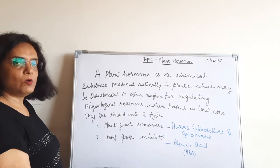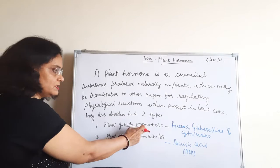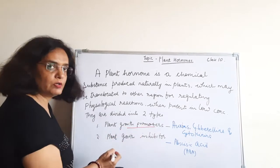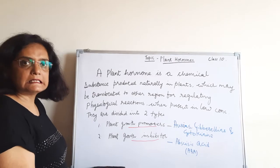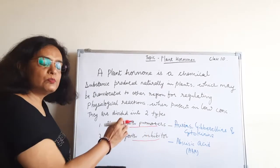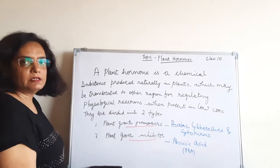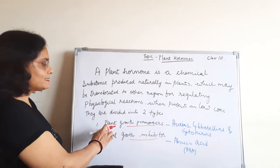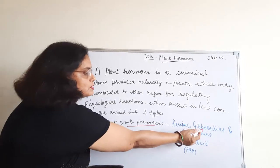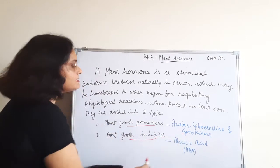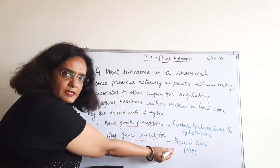Now these plant hormones, they are of two types: plant growth promoters and plant growth inhibitors. As the name suggests, plant growth promoters promote growth, and plant growth inhibitors inhibit growth. Examples of plant growth promoters are auxins, gibberellins, and cytokinins, and the plant growth inhibitor we will study is abscisic acid.